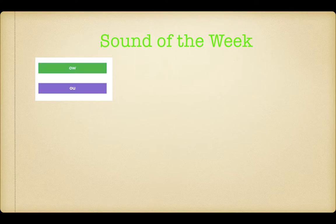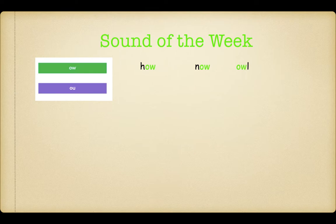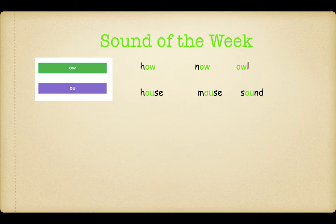The owl sound, using the grapheme O-W, or owl using the grapheme O-U. These are the words we're going to look at today: Howl, Now, Owl — we use O-W to make these words. And then we use the grapheme O-U to make House, Mouse, Sound.